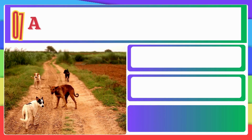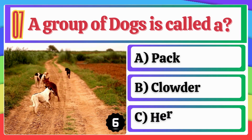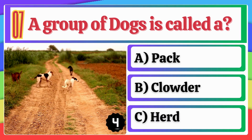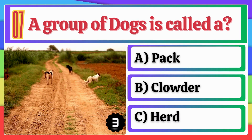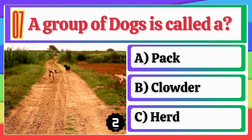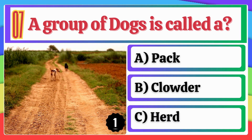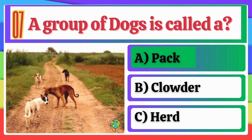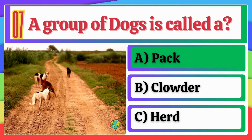A group of Dogs is called a: Pack, Clouder, or Herd? Option A, Pack, is the correct answer.